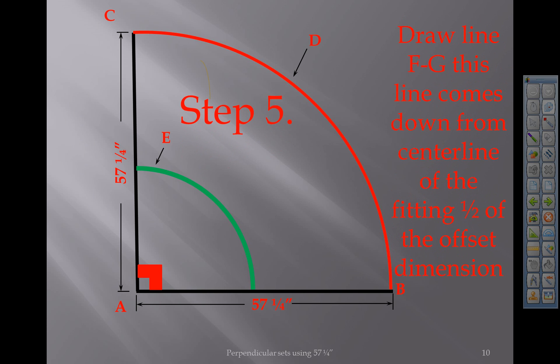Step 5: Draw a line FG. This line comes down from the center line of the fitting, half of the offset dimension. Half of the offset dimension, half of the offset dimension. 3 inches because the total offset was 6.